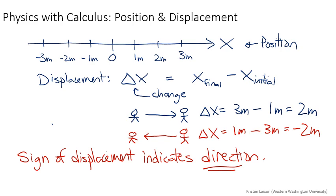So if you have a positive position, that means you're on the positive side of zero. But if you have a positive displacement, that means you're going in the positive direction. If you have a negative displacement, that means you're going in the negative direction.